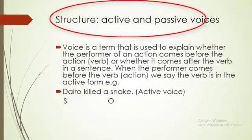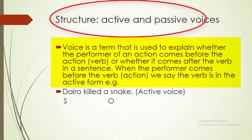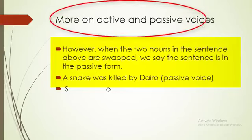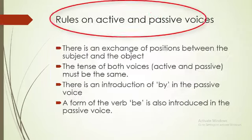Now let's focus on active and passive voices. Voice refers to who is performing the action and who is receiving it. For example: 'Dyro killed the snake' — 'killed' is a regular transitive verb. In the active voice we have 'Dyro killed the snake'; in the passive voice it becomes 'The snake was killed by Dyro'.